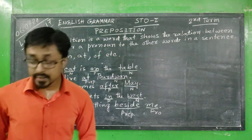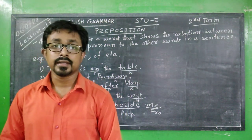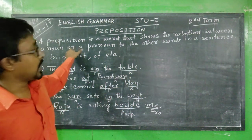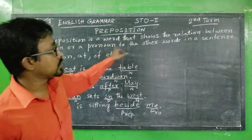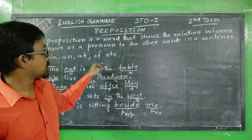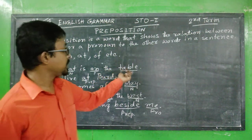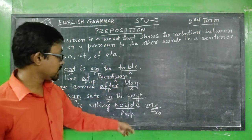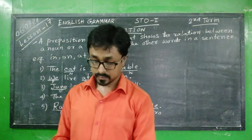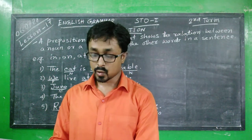So it is clear that a preposition is a word that shows the relation between a noun or a pronoun to the other words in a sentence. Those other parts of the sentence can be a noun or a pronoun. Now there are some exercise questions.